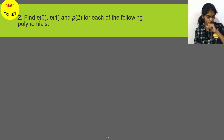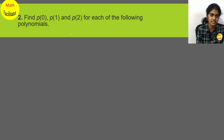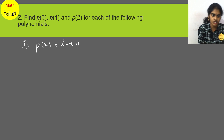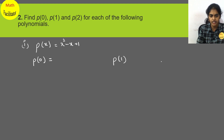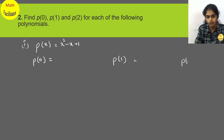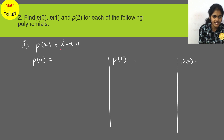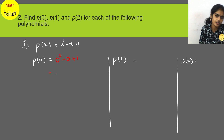Let's proceed to the next question: find p(0), p(1), p(2) for each of the following polynomials. The first polynomial given is p(x) = x² minus x plus 1. To find p(0), substitute 0: 0² minus 0 plus 1 equals 0 minus 0 plus 1. So the answer is 1.